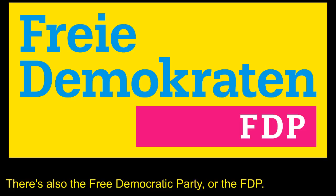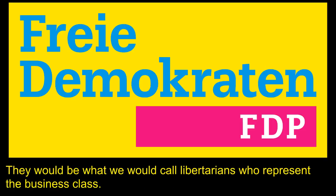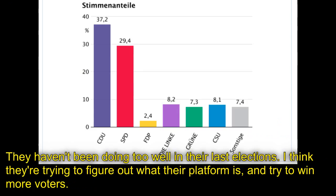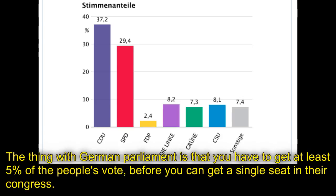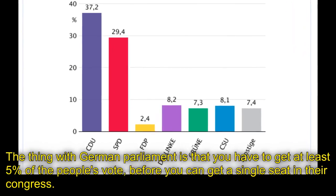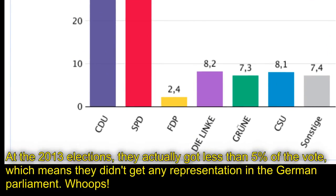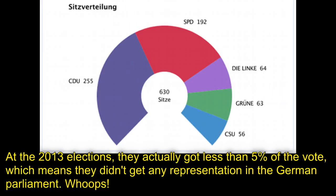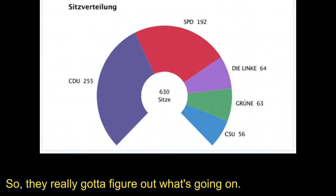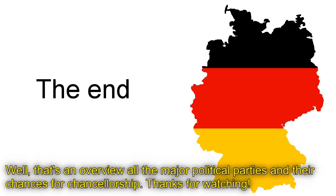There's also the Free Democratic Party or the FDP. They would be what we would call libertarians who represent the business class. They haven't been doing too well in the last elections — they're trying to figure out what their platform is and win more voters. The thing with German parliament is that you have to get at least 5% of the people's vote before you can get a single seat in congress. At the 2013 elections, they actually got less than 5% of the vote, which means they didn't get any representation in the German parliament. Whoops! Well, that's an overview of all the major political parties in Germany and their chances for chancellorship. Thanks for watching!